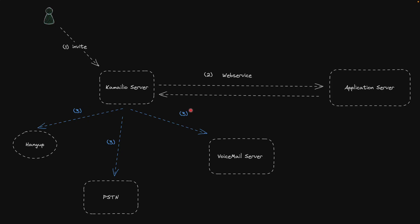To explain the AppLua module in Kamailio, I've prepared an example. When an invite is received from our VoIP provider to our Kamailio server, we need to ask our application server where to route the traffic — should we send it to voicemail, PSTN, or should we drop the invite and reply with a 404 Not Found?